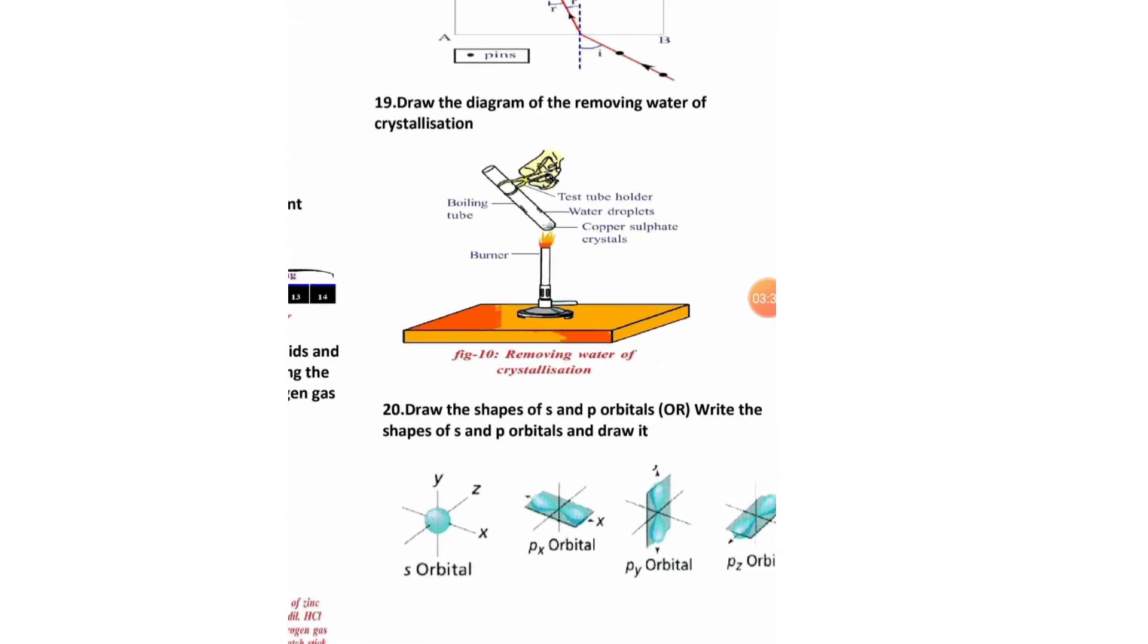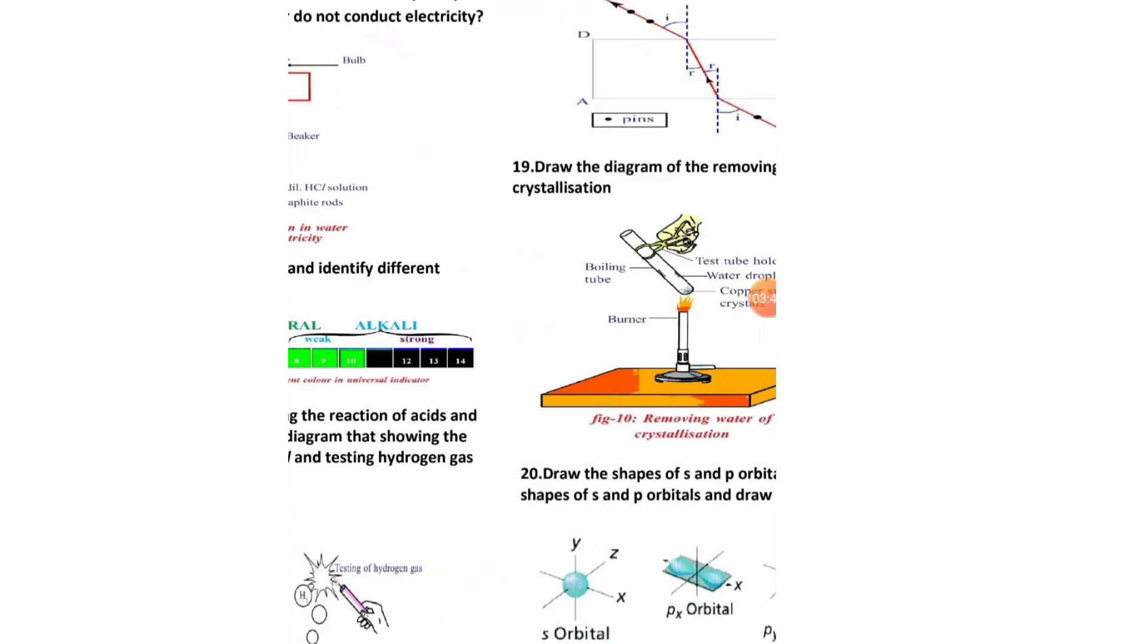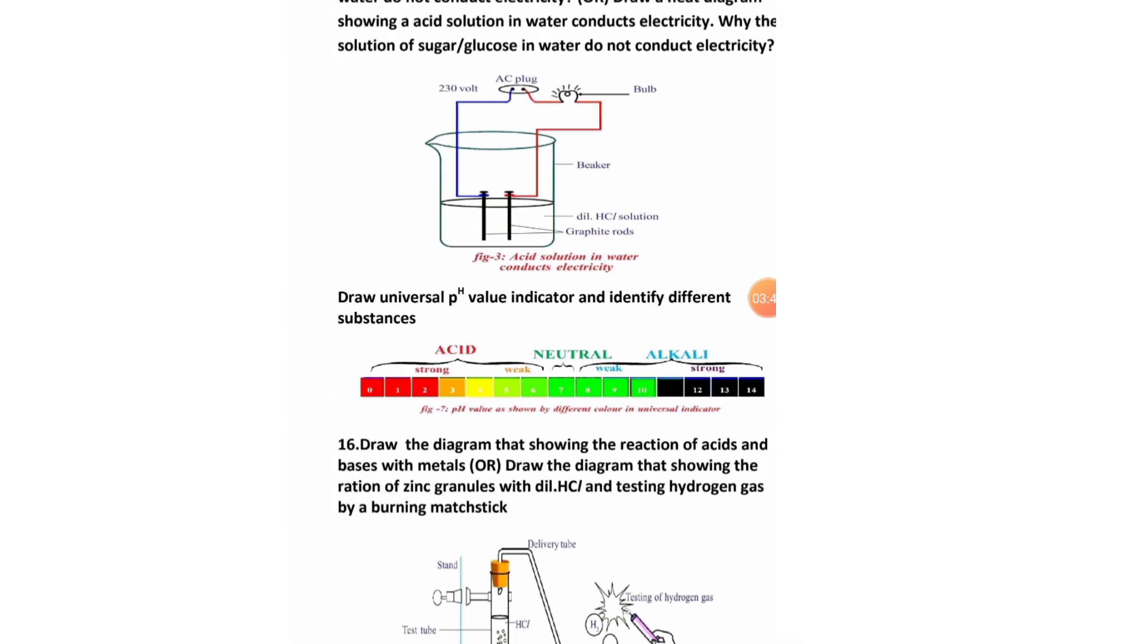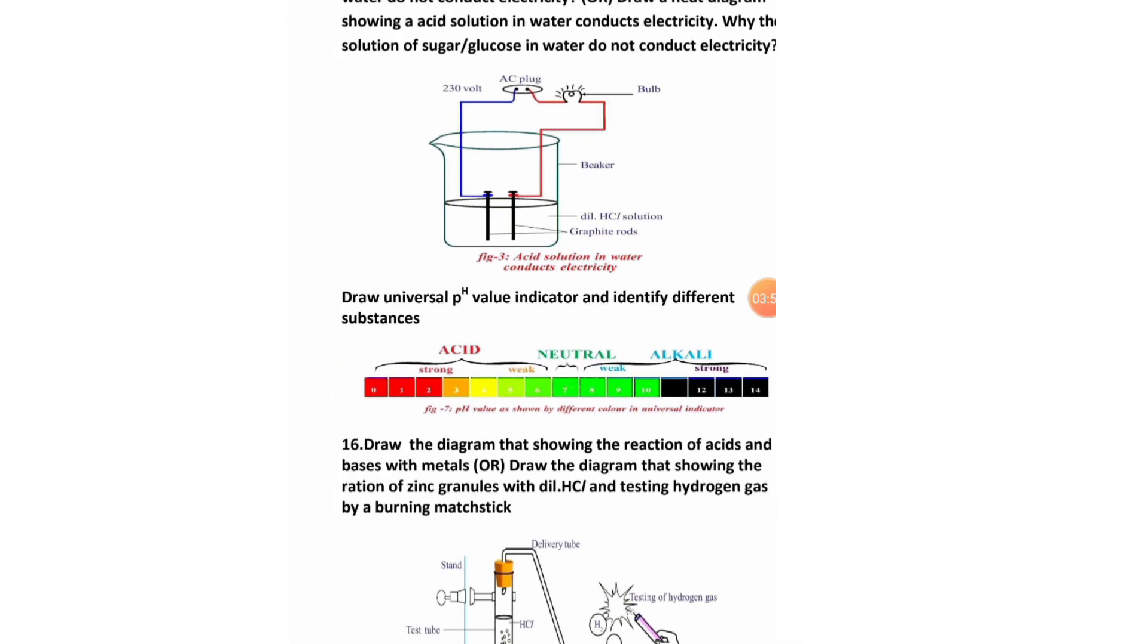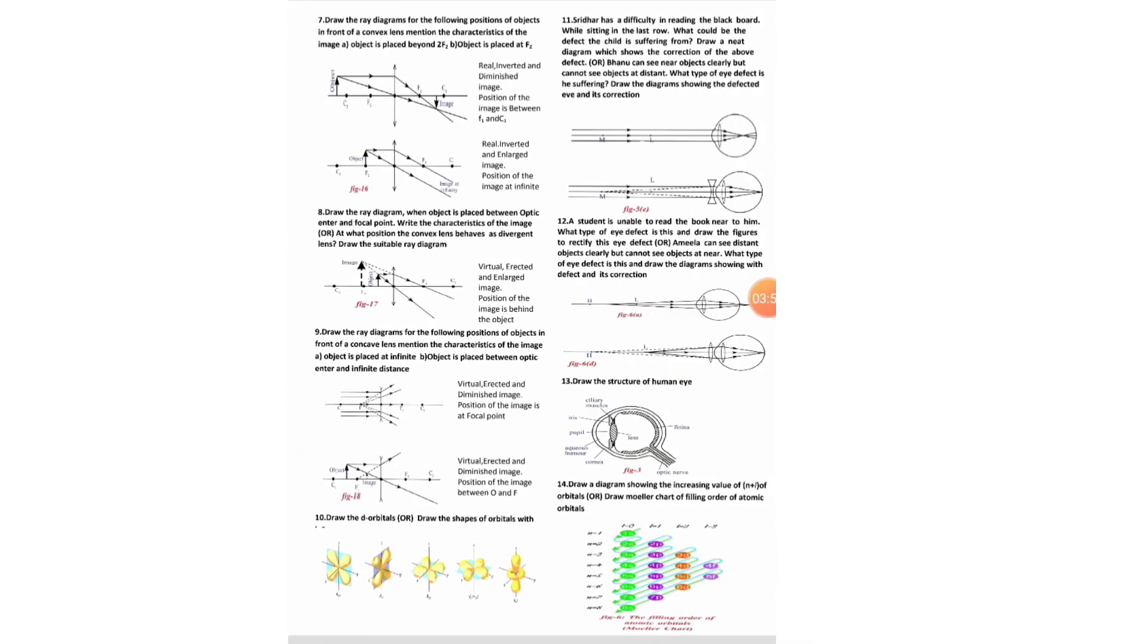Next, question number 19: draw the diagram of removing water of crystallization. Next, draw the diagram of S and P orbitals or write the shapes of S and P orbitals and draw it. These are the questions we are having, diagram questions. Prepare well and get good marks.